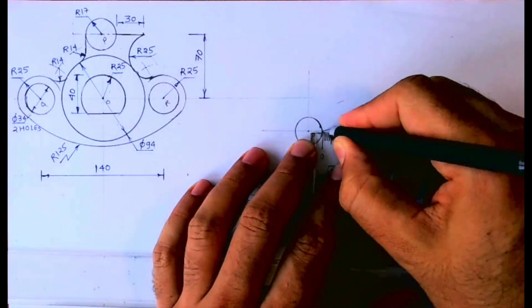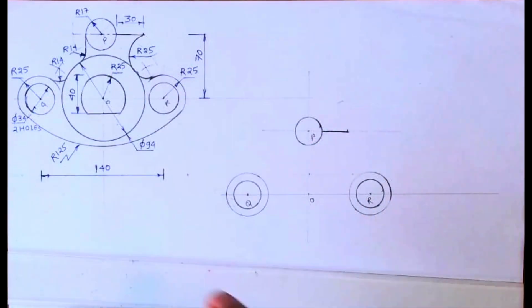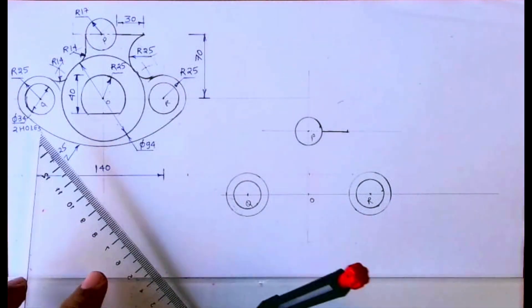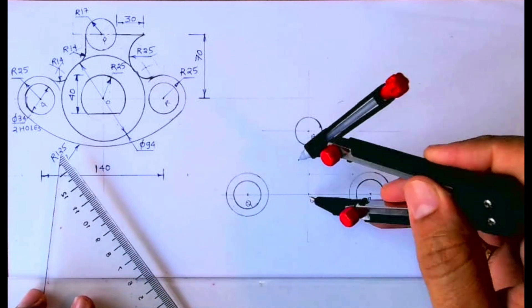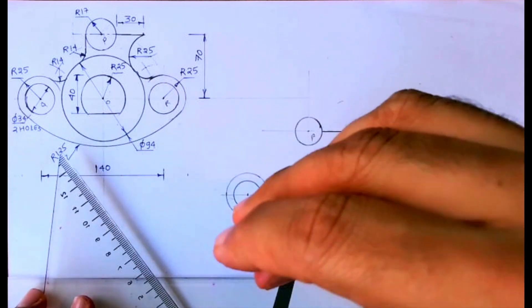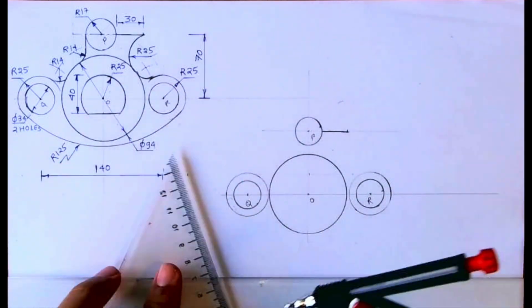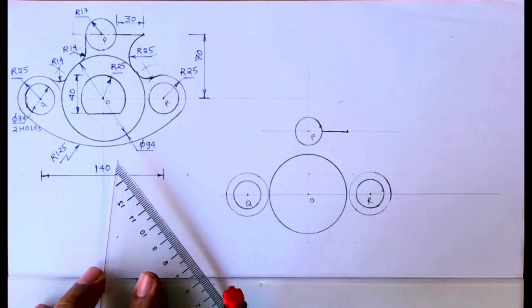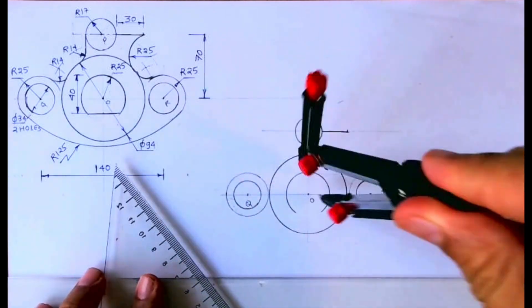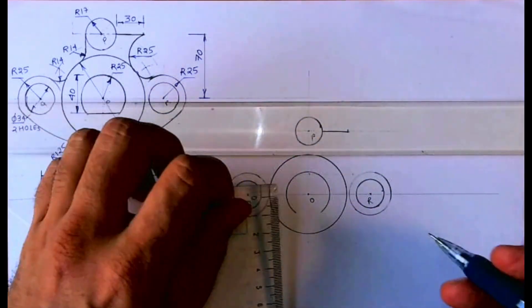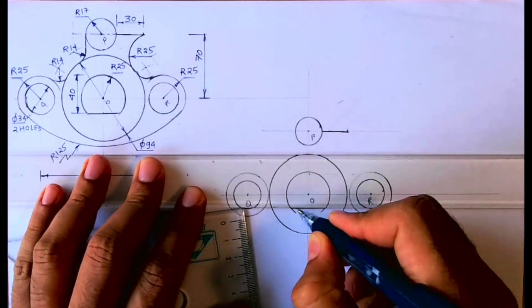Now after that, from here we'll take radius distance 30. Now we need to draw this radius 14, so what I'll do, first I will draw radius 47, that is diameter 94. Then if you see there is one more radius 25 inside that. So from point O we can draw radius 25 and from the top end we can go down by 40 and we can draw horizontal line.